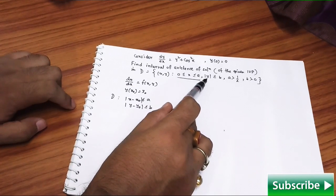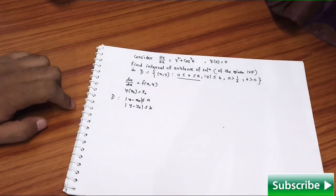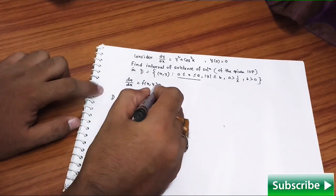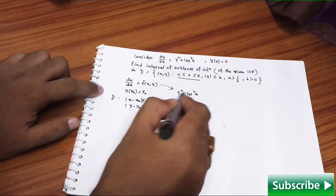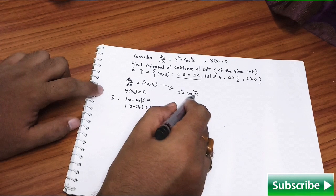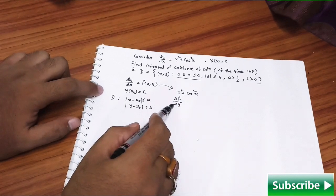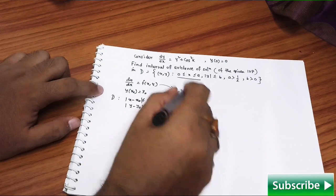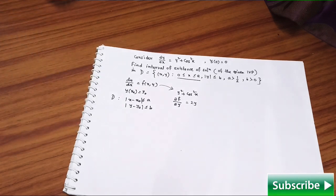There is also a restriction for y, and a should be greater than 1/2, b is greater than 0 - that is the scenario. Now look here: in this problem your f is nothing but y² + cos²x. It is a continuous function in that given domain. As well as, if you simply check ∂f/∂y, then obviously you can find that it is 2y and it has no problem in the given domain. It is continuous in that domain. Two hypotheses are satisfied.